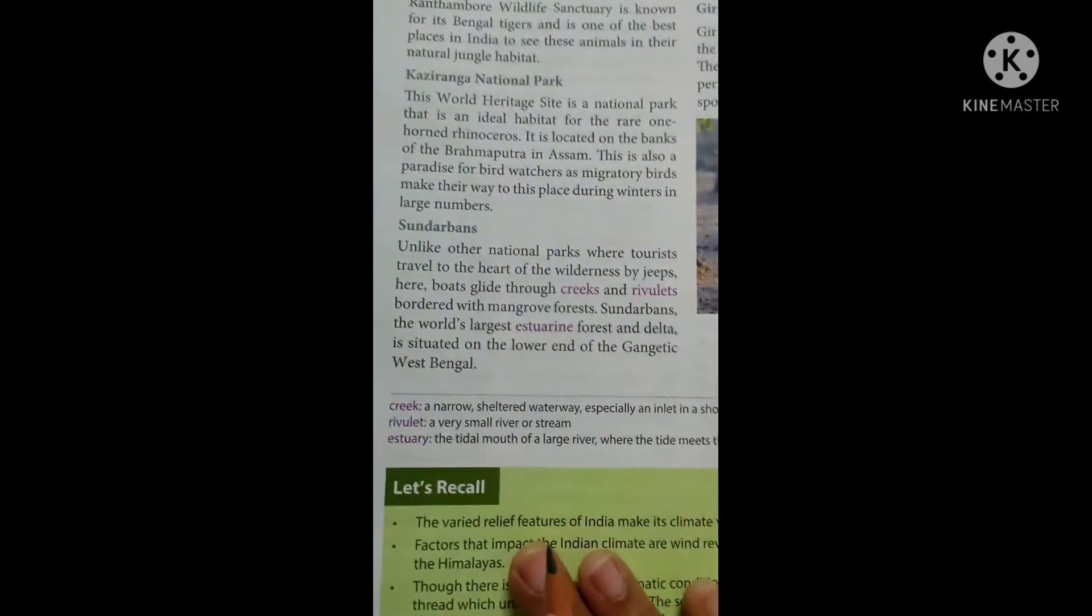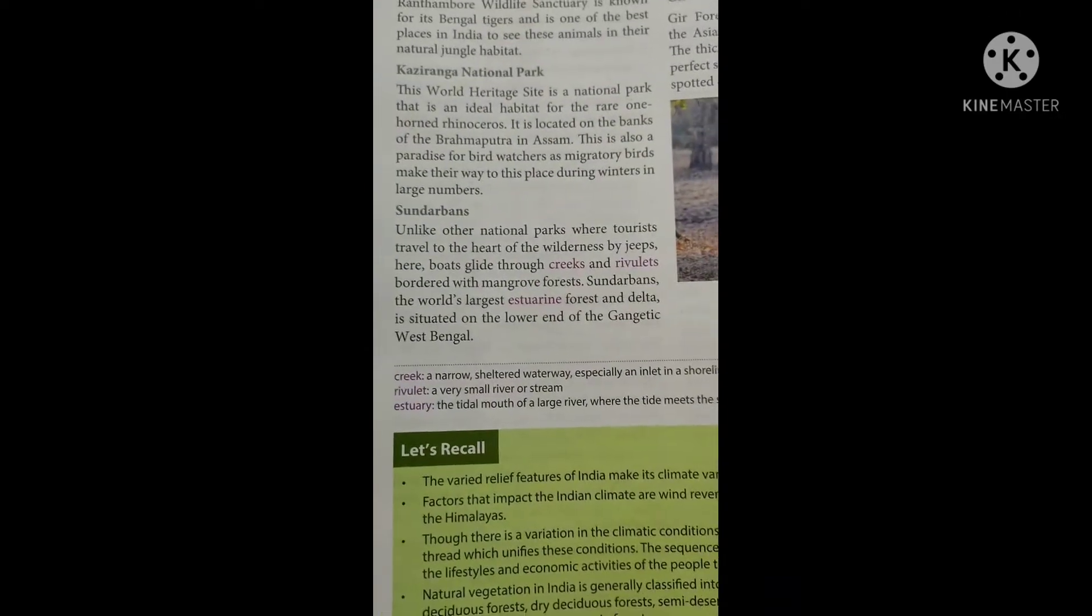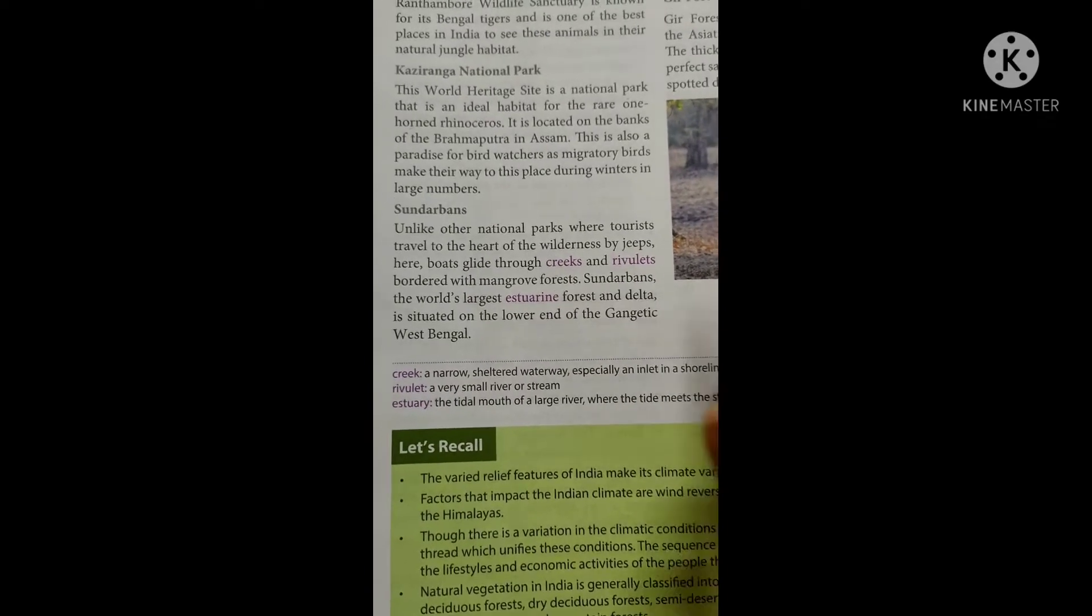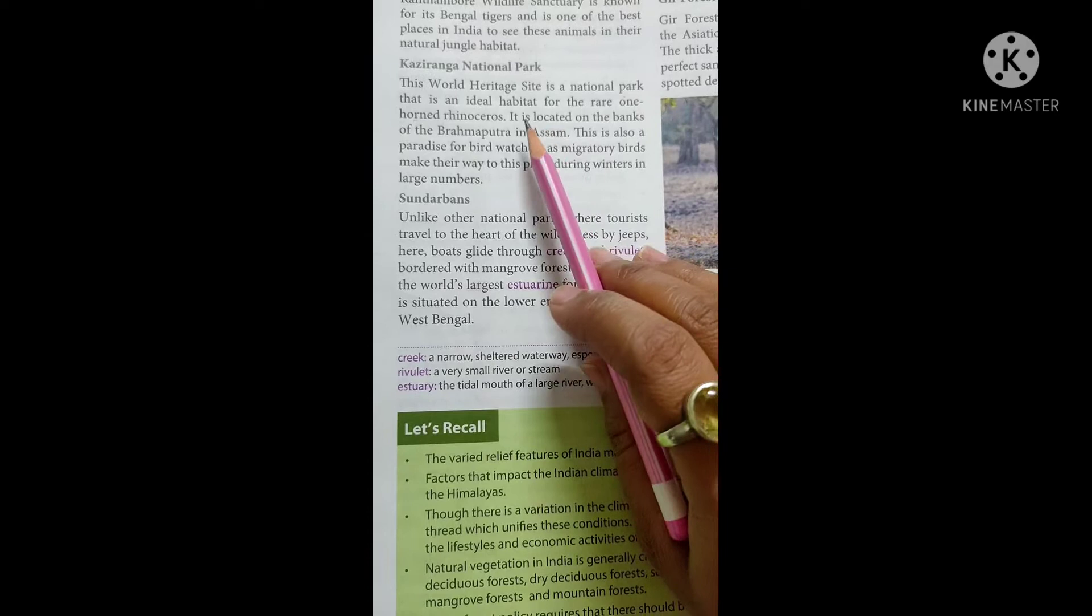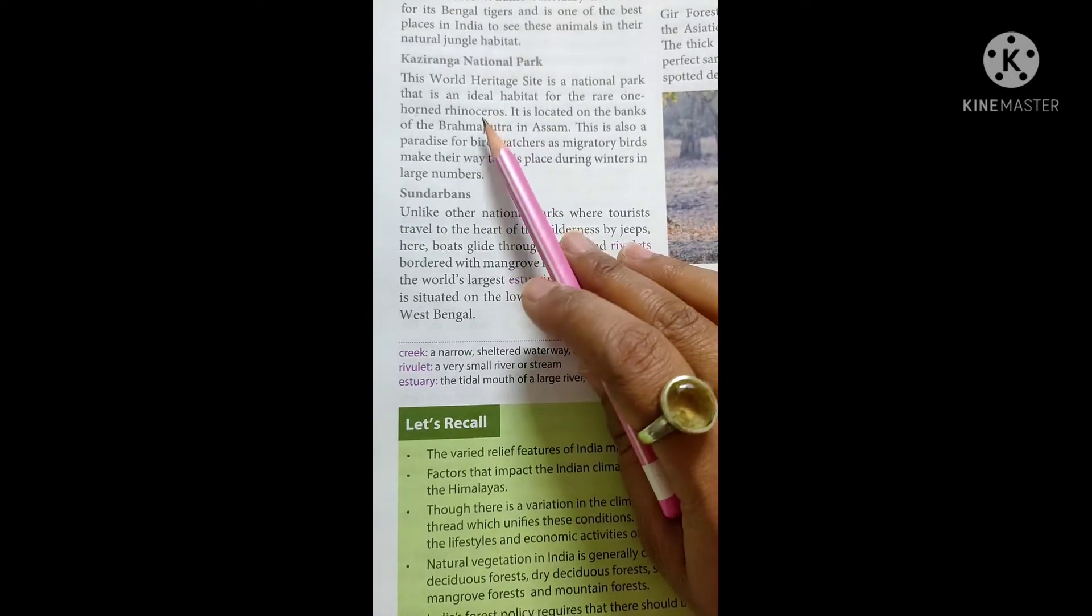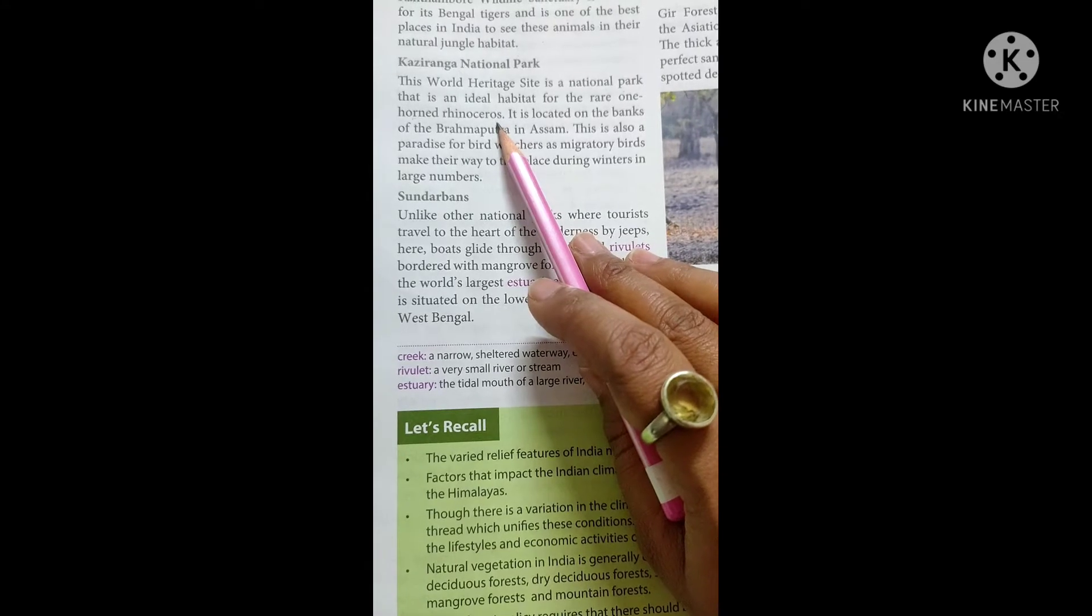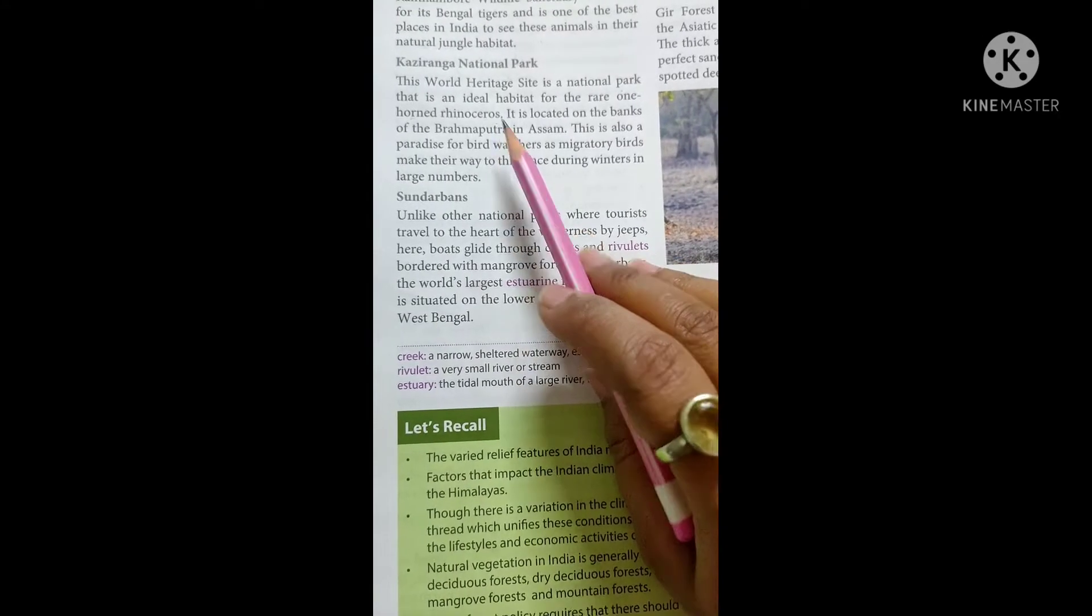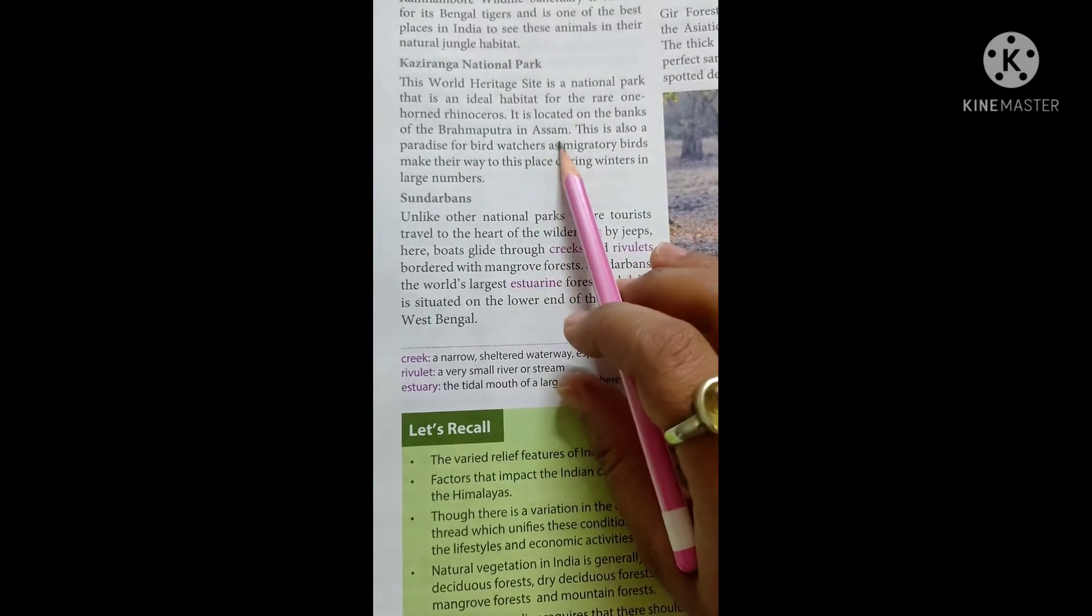Kaziranga National Park, where is it situated? It is a World Heritage Site, meaning it is a very old heritage site. It is a national park where one-horned rhinoceros has been seen. And it is located on the banks of Brahmaputra in Assam.